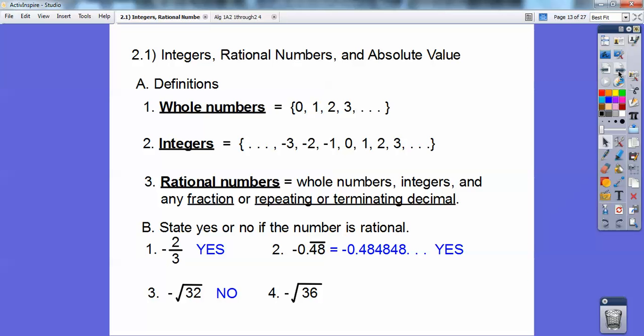But if you have the negative square root of 36, that's just plain old negative 6, and negative 6 is an integer, which is a rational number, so yes.